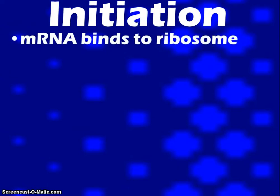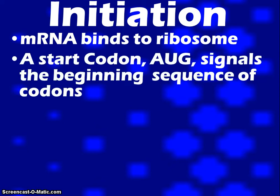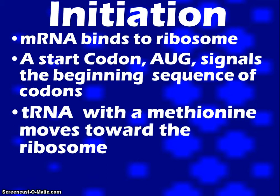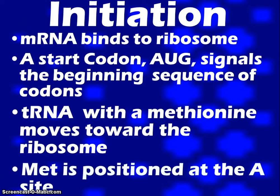So, initiation. The mRNA is going to bind to the ribosome and it will search for a start codon, which is called AUG. AUG is going to signal the beginning of everything, so it will not start until it finds AUG. With our codon chart — and I will show you that in class — AUG codes for an amino acid called methionine. So a tRNA will bring in the methionine, and that will land at the A site because it's one amino acid.